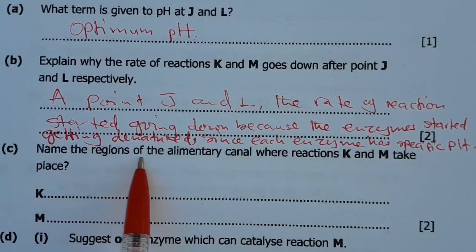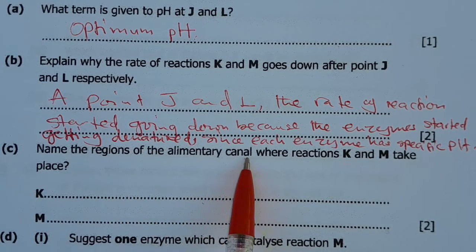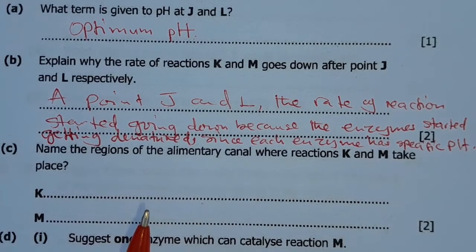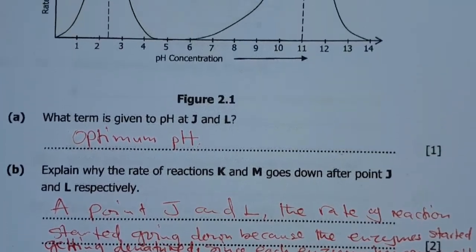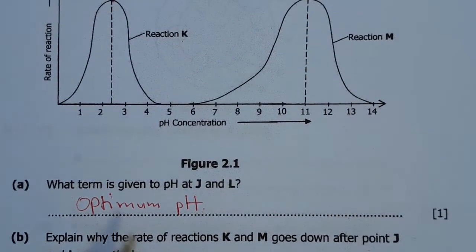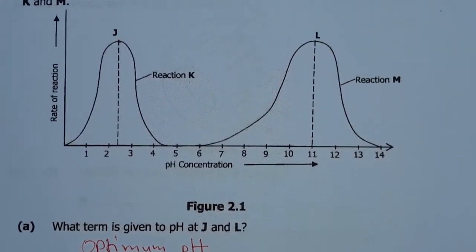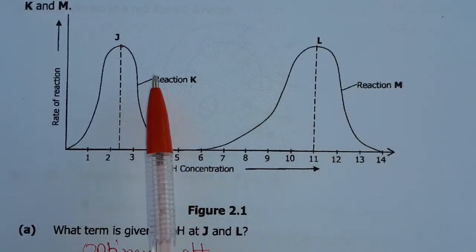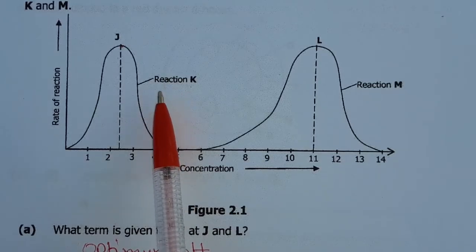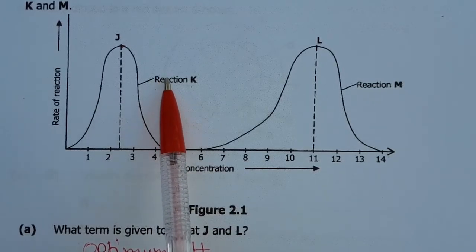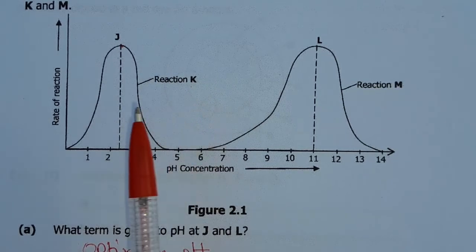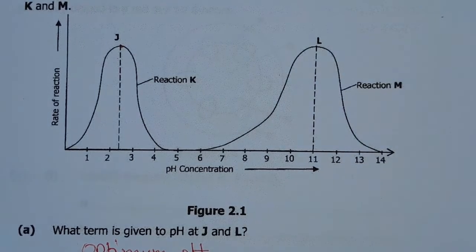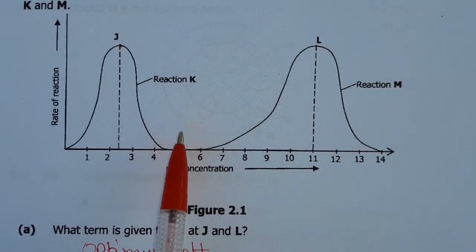Part C says, name the regions of the alimentary canal where reaction K and M take place. So reaction K is in the acidic conditions. So where in the alimentary canal is the acidic condition? That's in the stomach because the stomach is acidic.